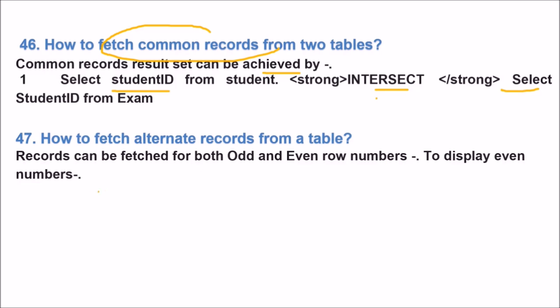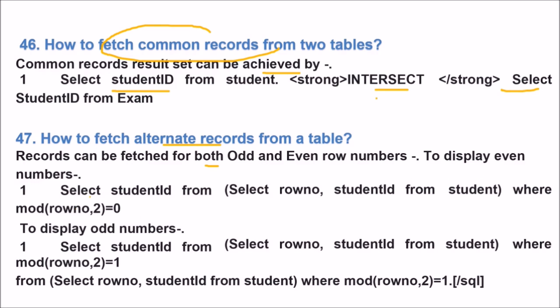How to fetch alternate records from a table? Records can be fetched from both odd and even row numbers. To display even numbers you can select student id from select where MOD row number comma two equal to zero. And to display odd you are using row number comma two equal to one. The main theme of this question is this one.